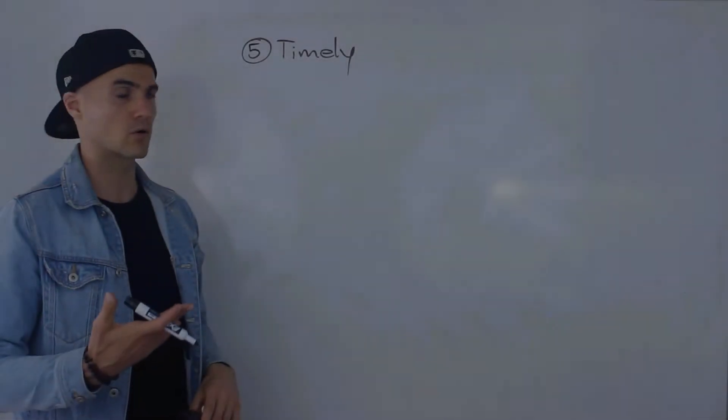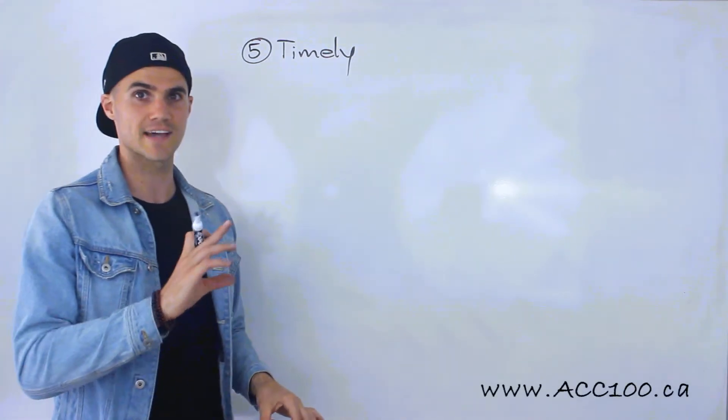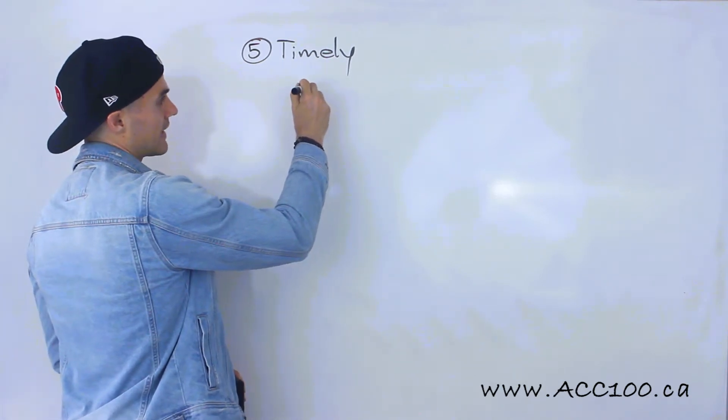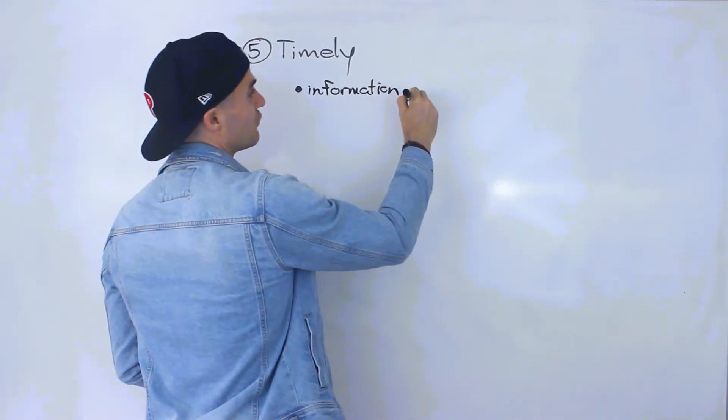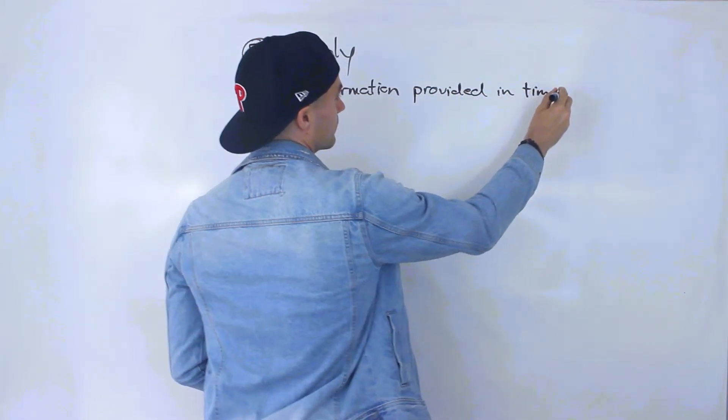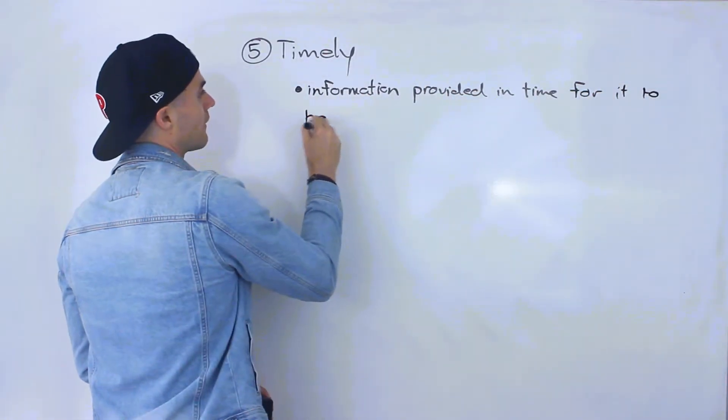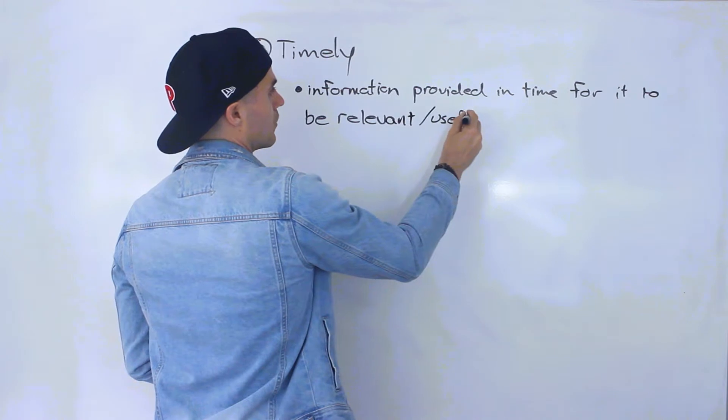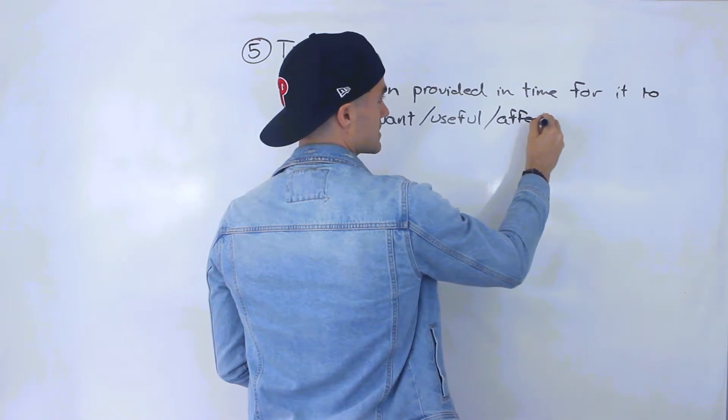And then the fifth quality or qualitative characteristic we'll go over is timely, or sometimes you'll see this called timeliness. What this means is that information has to be provided in time for it to be relevant or useful or for it to affect decision-making.